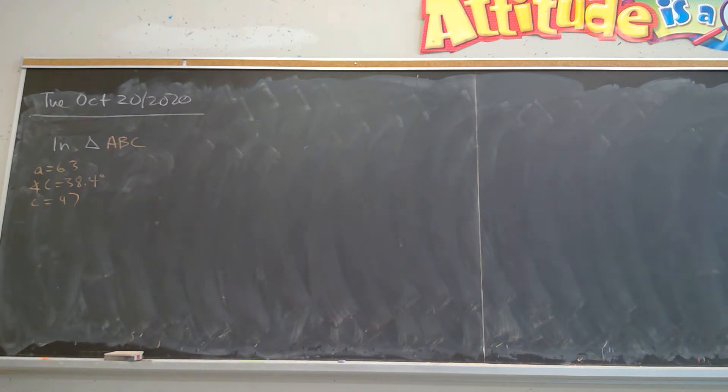In triangle ABC, they gave you side A is 63, angle C is 38.4, and side C is 47.